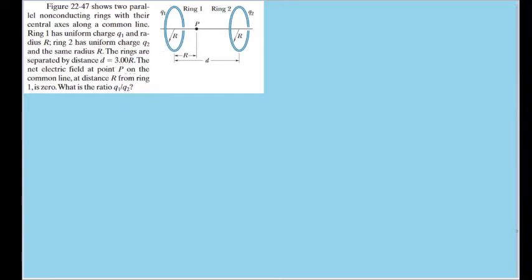The rings are separated by a distance of three times r, and the net electric field at point P, which is on the line coaxial of both rings, is zero. We want to find the ratio of the charge of ring 1 to the charge of ring 2.